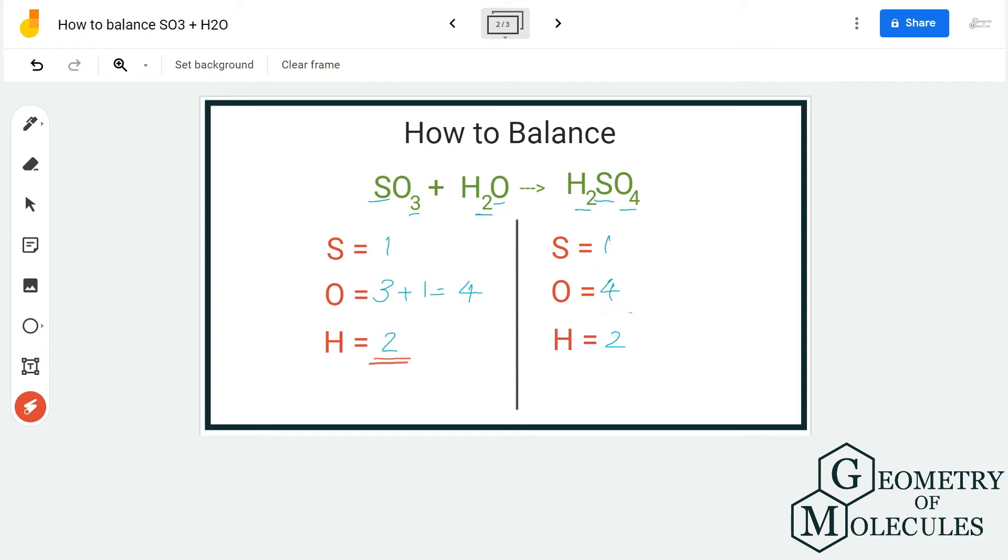What people generally mess up during balancing equations is not counting the numbers of oxygen and hydrogens properly. As you can see here in the reactant side, oxygen is present in both these compounds.